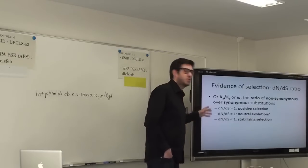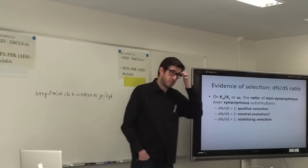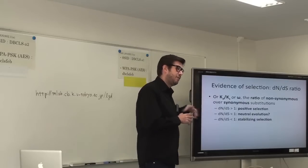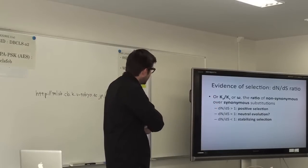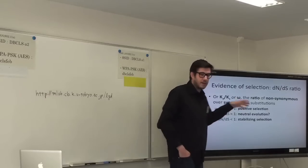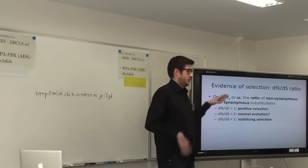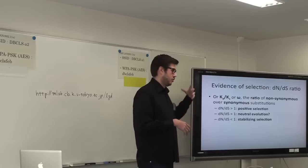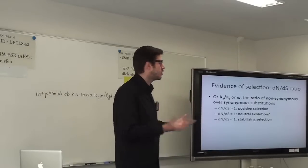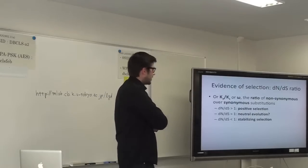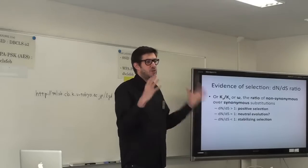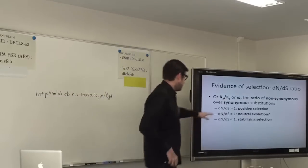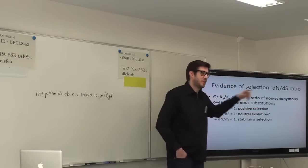Depending on what the dN/dS ratio is, we draw different conclusions. If there are many non-synonymous substitutions — a high ratio — we assume positive selection favoring change in the gene product. If the ratio is roughly one, it might indicate neutral evolution, though opposing forces like stabilizing and directional selection could cancel each other out. If the ratio is smaller than one, we conclude the gene product needs to stay as it was — stabilizing or purifying selection. I'm primarily interested in the first case: directional selection toward a new adaptive optimum.